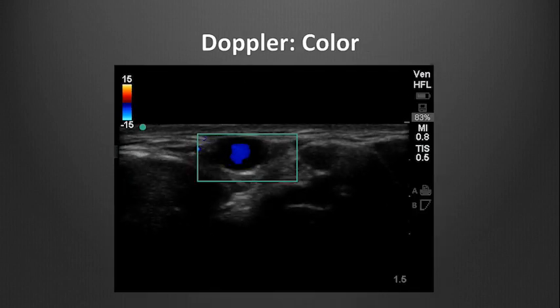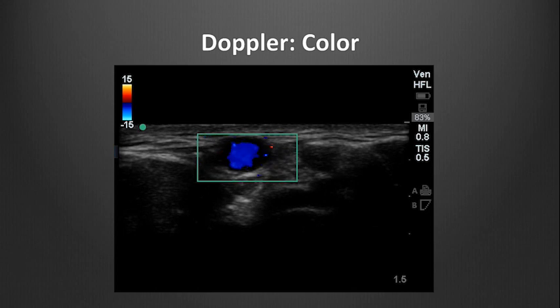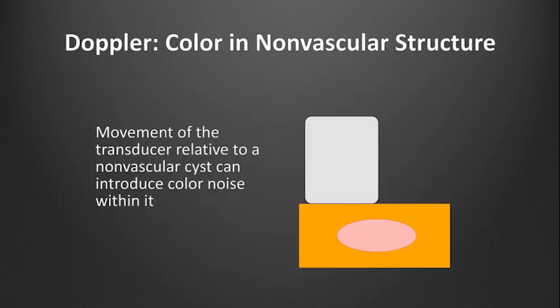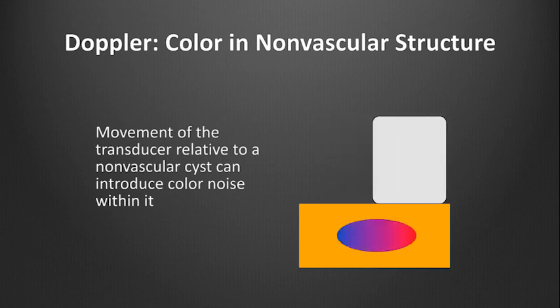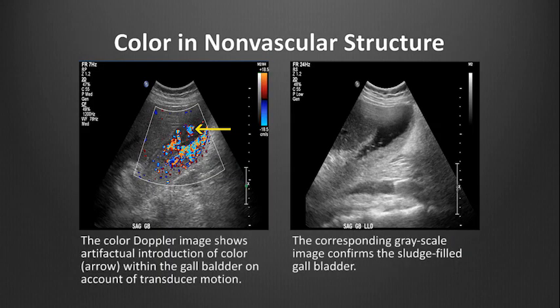Switching gears, we will now discuss Doppler-related artifacts that occur when using color. The most common artifact encountered when using color Doppler is the appearance of color in a non-vascular structure due to movement of the transducer. Any movement of the reflector or transducer relative to the other is capable of producing a Doppler shift. Here we see the color artifact within the fluid-filled gallbladder due to movement of the probe. Be sure to hold the probe completely still when using color to distinguish a structure with flow.